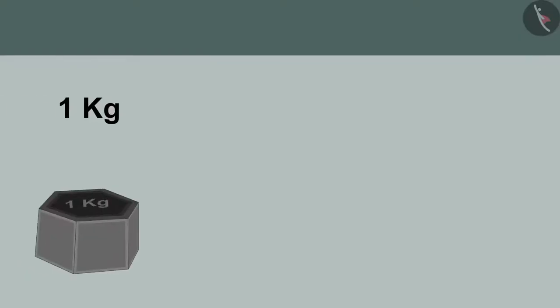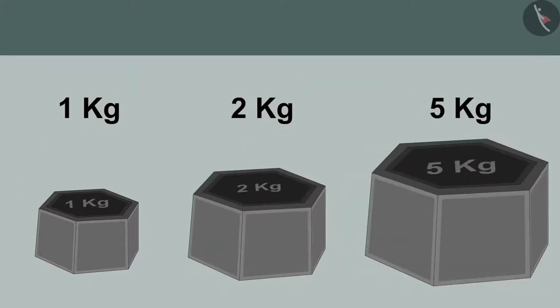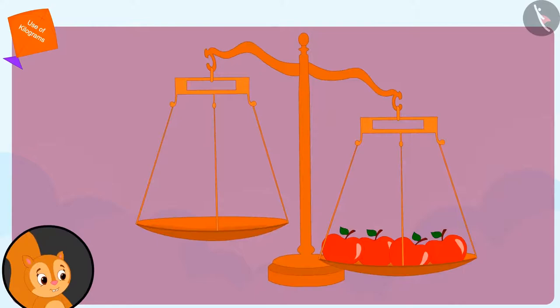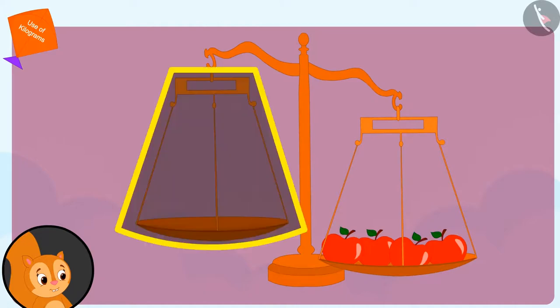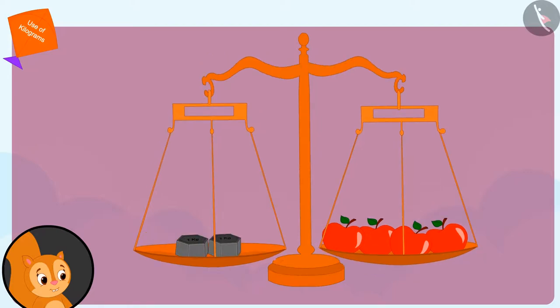Bhoala said, 'Look at this — we can measure the weight of objects using this kind of weight. This weight is 1 kg, this is 2 kgs, and this is 5 kgs.' Bhoala then weighed the 4 apples of Chanda on the scales of his shop. He placed the apples on one side and a 1 kg weight on the other side. The apples were still heavier, so Bhoala placed 1 kg more weight, and both sides of the scale came to the same level.